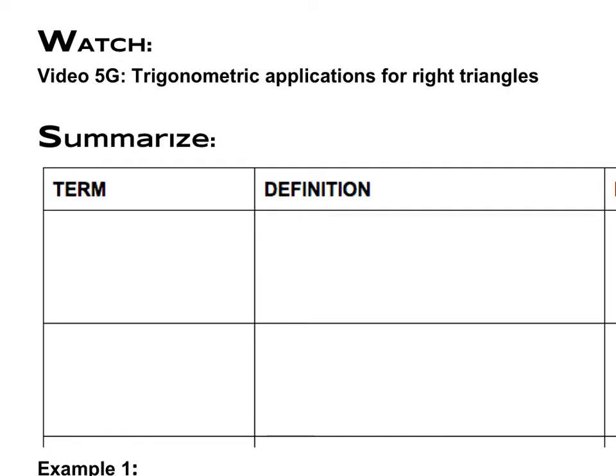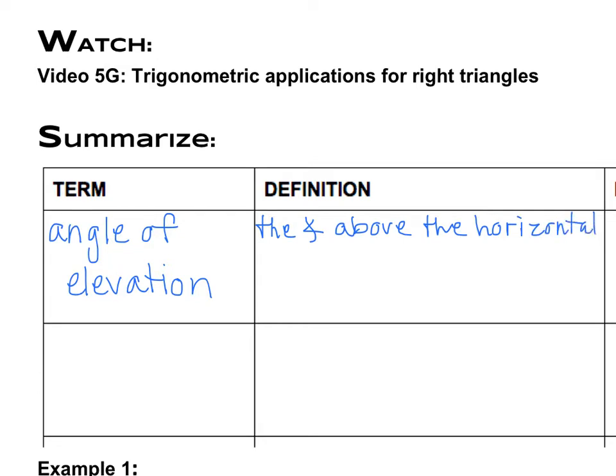So the first thing we need to do is to identify a few new vocabulary words, and the first one is the angle of elevation. In trigonometric applications, the angle of elevation is the angle above the horizontal that an observer must look up to see an object.